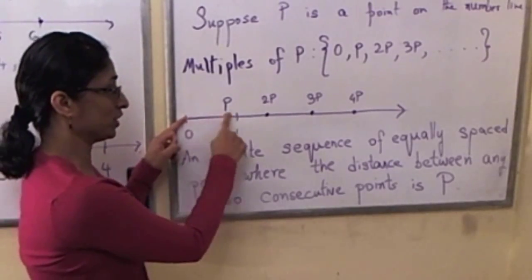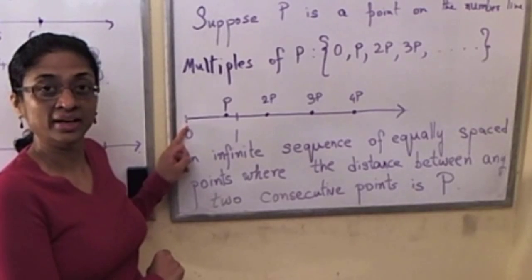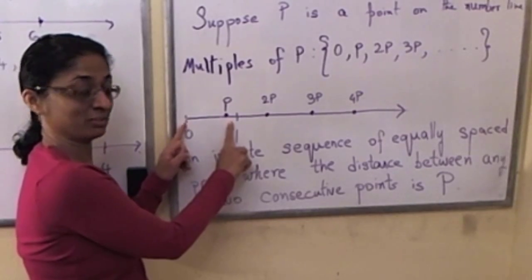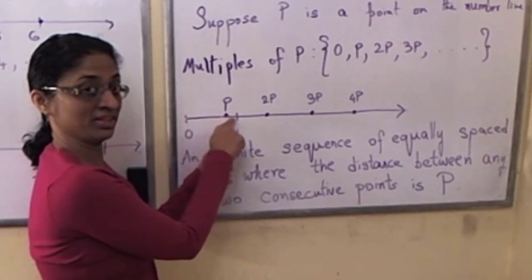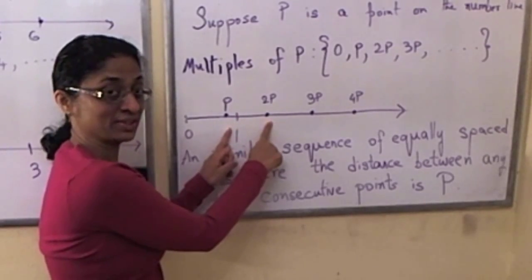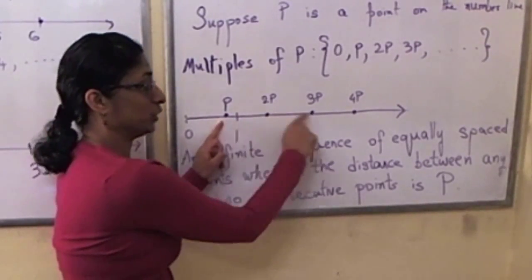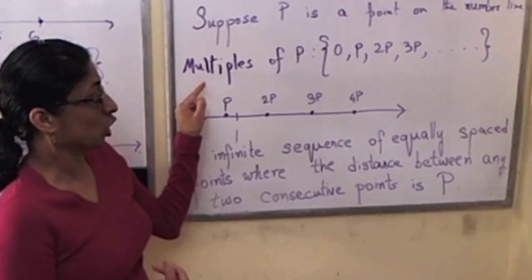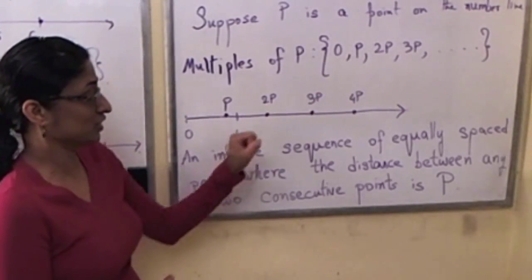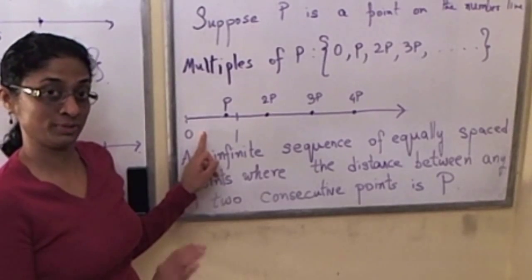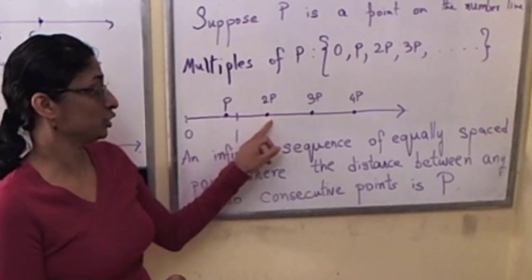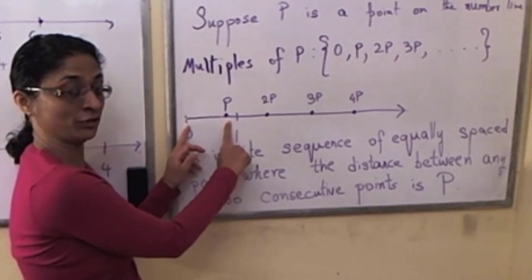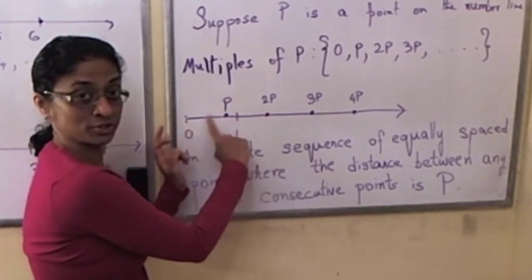Here you see those points as the thickened dots on the number line. We look at the segment from 0 to p, take the segment and slide it to the right until the left-hand point is at p, then look at where the right-hand point is, and keep track of those points. That's how I produce the infinite sequence of points — those are the multiples of p. By convention, 0 is the 0th multiple of p, p is the first multiple, 2p is the second multiple, and so on. p is at a distance of p from 0; 2p is at a distance of p plus p from 0.